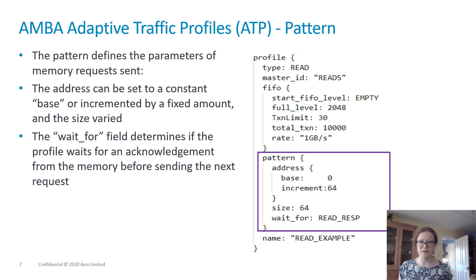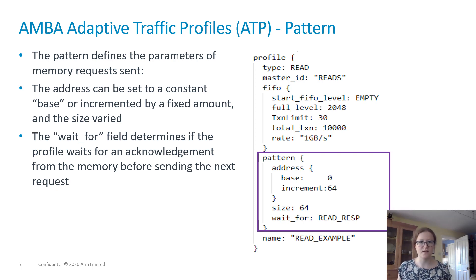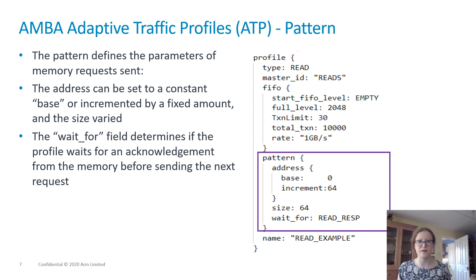The Pattern field defines the properties of the requests to be sent. The address can be a constant or can be incremented, and the size is adjustable. The Wait For field determines if the profile waits for a response or acknowledgement before proceeding. There can also be a Wait For input in the main body of the profile descriptor, which would mean that the profile waits for a given event, such as another profile terminating, before starting to send requests.